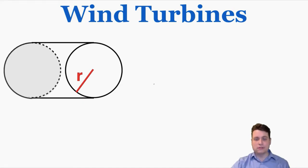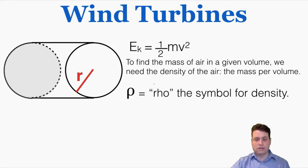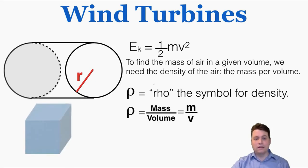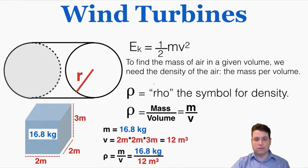To find how much kinetic energy the cylinder has, we use KE = ½mv². To find the mass of air in a given volume we need the density of air — mass per volume. The symbol rho (ρ) represents density in physics: ρ = m/V. For example, a box of air with mass 16.8 kg and sides of 2 m, 2 m, and 3 m has a volume of 12 m³. So ρ = 16.8 / 12 = 1.4 kg/m³. That's how you use the density equation, which is very important for calculating the kinetic energy of air.